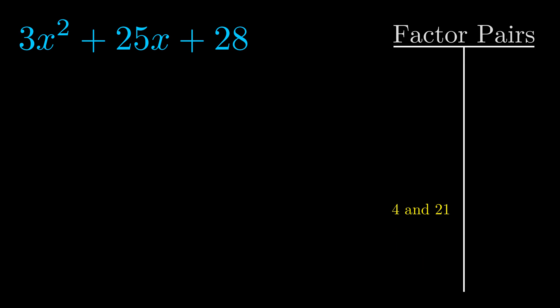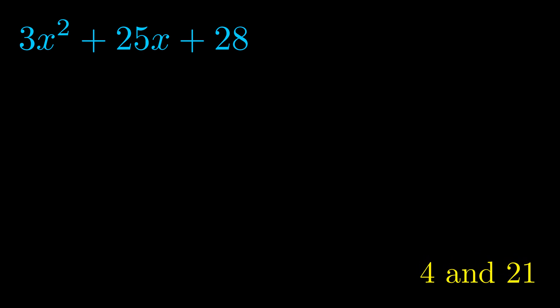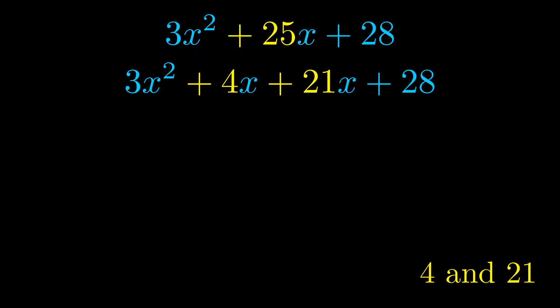Now once we have this factor pair, what we want to do is we want to use it to split up the b value. Notice how I'm going to keep my first term and my last term completely unchanged. It is only this b term highlighted in yellow that gets expanded into this correct factor pair.